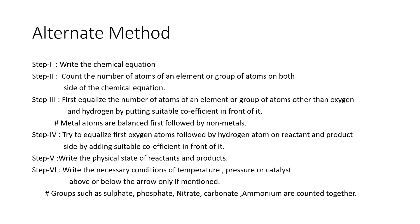In the alternate method, we balance the chemical equation in six steps. Step one: write the chemical equation as given. Step two: count the number of atoms or groups of atoms. A group of atoms means where a group contains more than two atoms — for example, sulfate, phosphate, nitrate, and carbonate are all groups containing more than two or three atoms, and they are counted as a single entity during calculation.